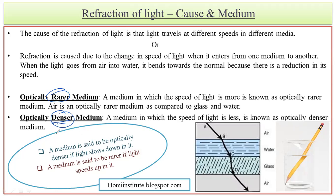To identify rarer and denser: the medium through which the light ray crosses more easily will have more speed, and the medium through which the light ray faces more barrier will have less speed. If the speed is less, it is a denser medium; if the speed is more, it is a rarer medium. For example, comparing air and glass: air is the rarer medium and glass is the denser medium.